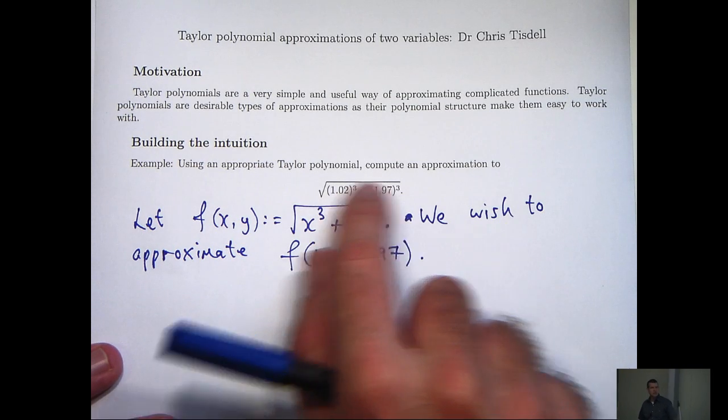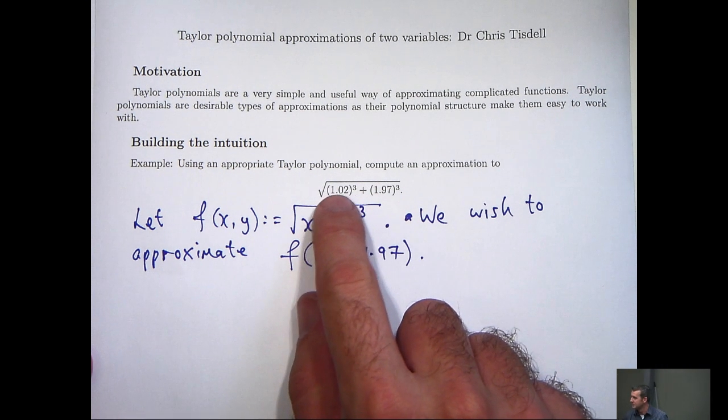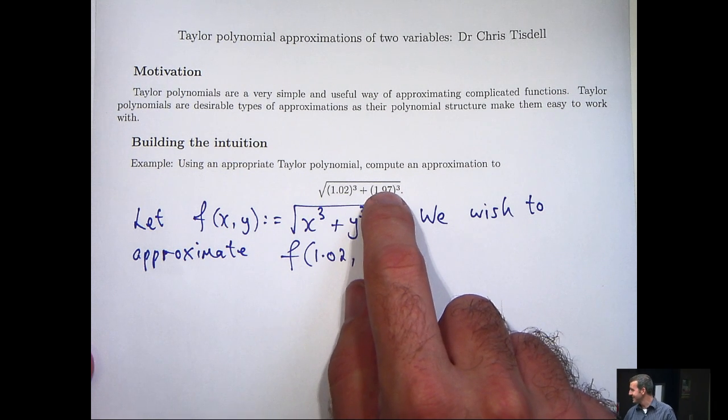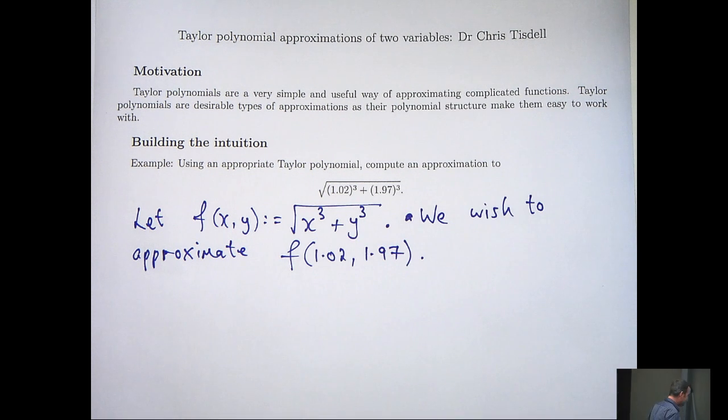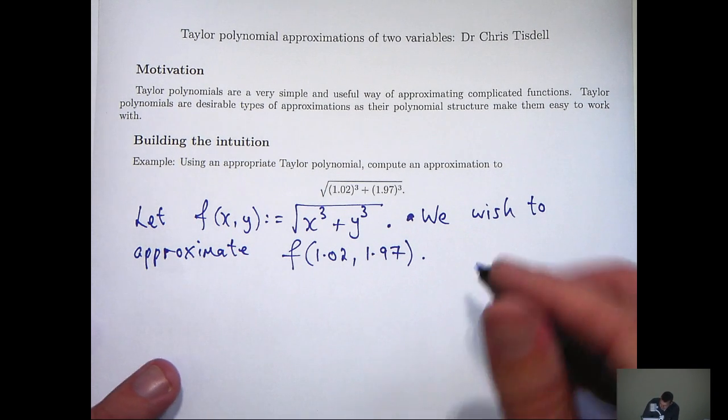Because we're not given any specified degree of accuracy for this approximation, the first thing you can do is, well, say okay, 1.02 is nearly 1 and 1.97 is nearly 2. So if I replace with 1 and 2, I'll get square root of 9, which is 3. However, we can do a bit better than that. I'm going to use the simplest Taylor polynomial approximation.